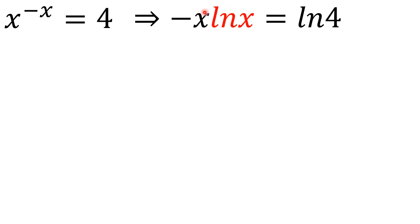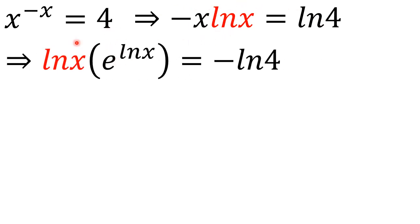In this case, friends, if you look at this x as e to the ln x, we have this ln x this way, here we have e to the ln x, then we multiply negative 1 on both sides, we have negative ln 4 to the right hand side. So in this case, at this point we see that this is in a very good form for us to use the Lambert W function.